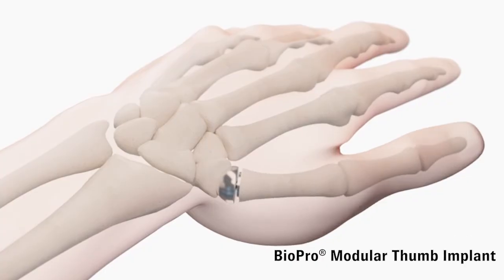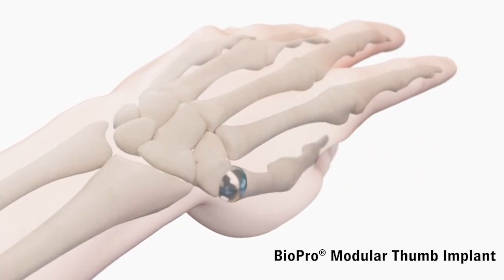Introducing the BioPro modular thumb, a patented two-piece implant designed to replace the joint, not remove it.